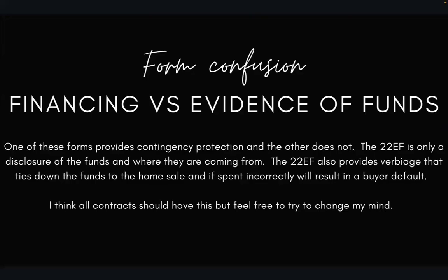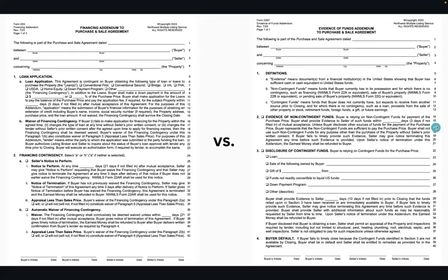There's been some confusion between financing and evidence of funds. One of our forms has a contingency protection and the other one does not. The 22EF is only a disclosure of the funds and where they are coming from. The 22EF also provides verbiage that ties down the funds to the home sale, and if the funds are spent incorrectly, it will result in a buyer default. It's my personal opinion that all contracts should have a 22EF.